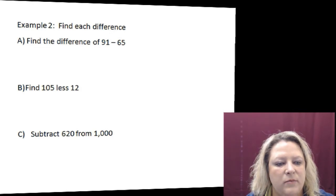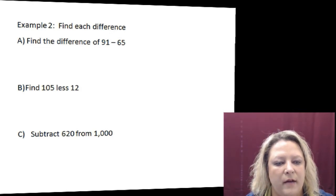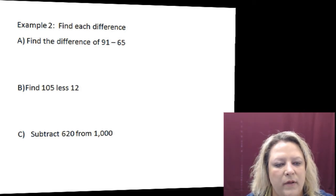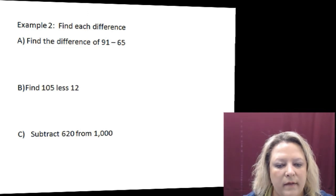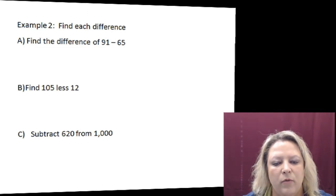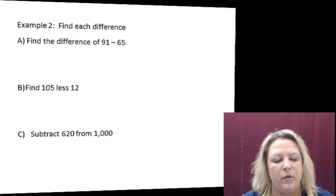Then it says subtract 620 from 1000. That means the 1000 would go on top, the 620 would go on the bottom, and then you would subtract. We're going to work that one right now, so we're going to switch to the board.